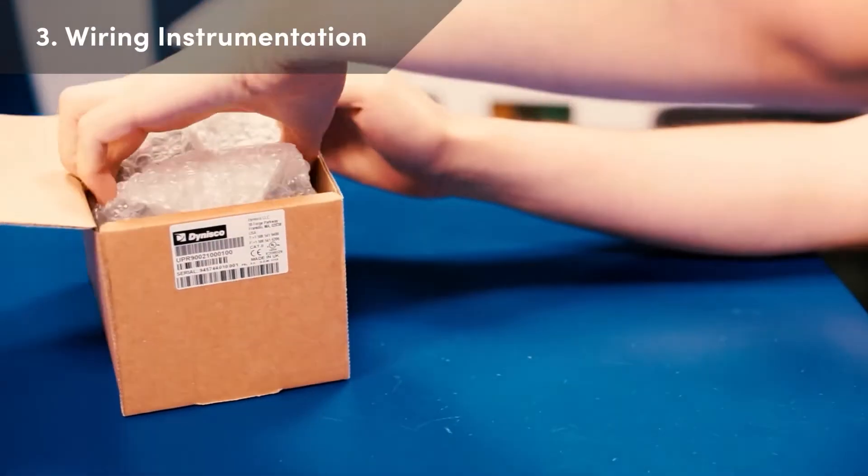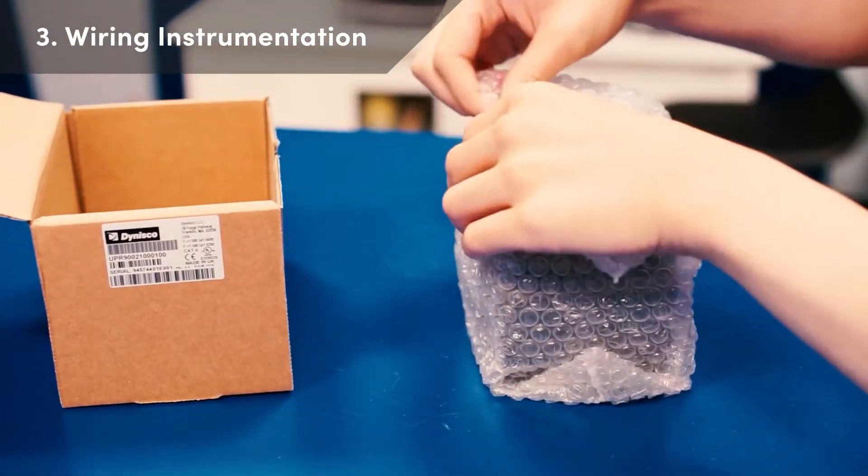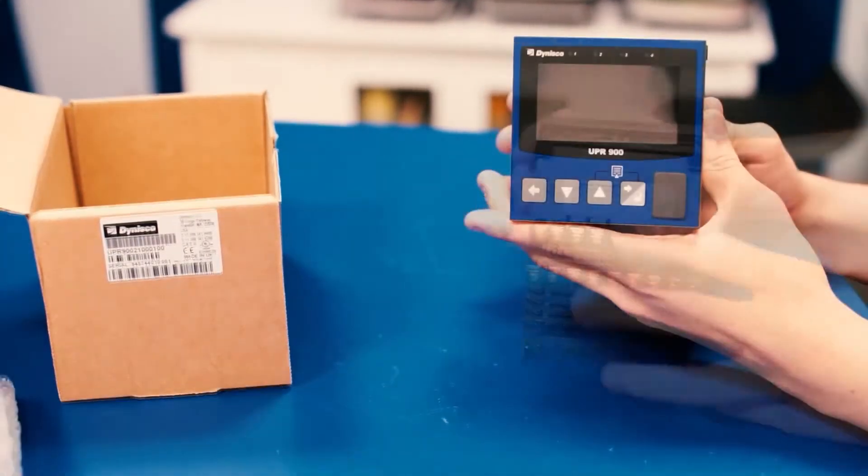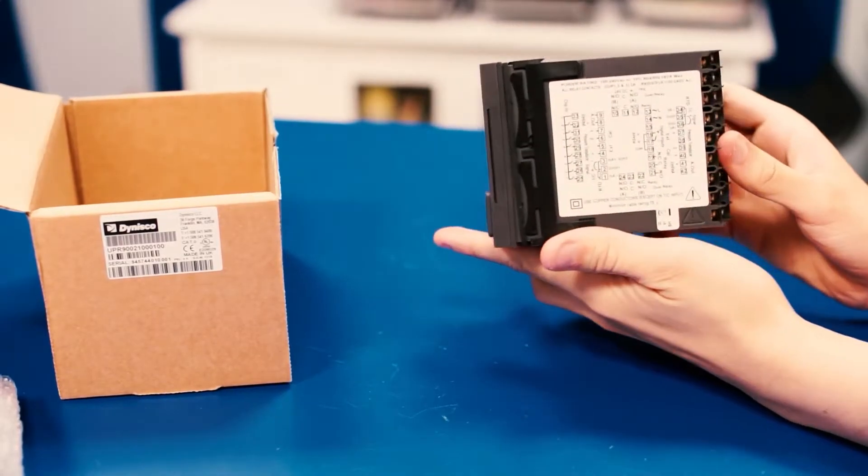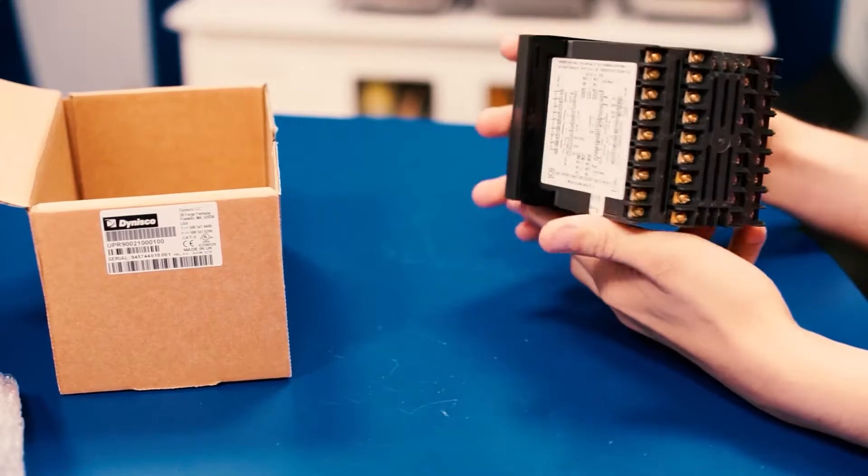Next, the selected indication device or controller is removed from the box and examined for damage. In the unlikely event damage is discovered, Dynisco recommends that the customer document the damage and return the instrument to Dynisco for evaluation.